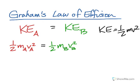Now, since we have one-half on both sides, we can cross both of those out. It's like multiplying by two on both sides. So now we just have the molar mass of gas A and the velocity of gas A squared equals the molar mass of gas B times the velocity of gas B squared.